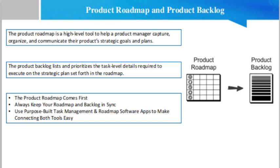Using the product backlog alongside the product roadmap: if the roadmap and backlog should be used together as complementary tools, how should a product team go about this? Here are a few suggestions. The product roadmap comes first. Before you can begin prioritizing specific product development tasks, you first need to have an overarching strategic vision for the product — your 'why.' You will almost certainly also need to receive the green light from your executive team and other stakeholders to move forward with your product's strategic plan before deploying budget, developers' time, and other company resources. For these reasons, you should develop your roadmap first and determine your product's high-level objectives, priorities, and plans.